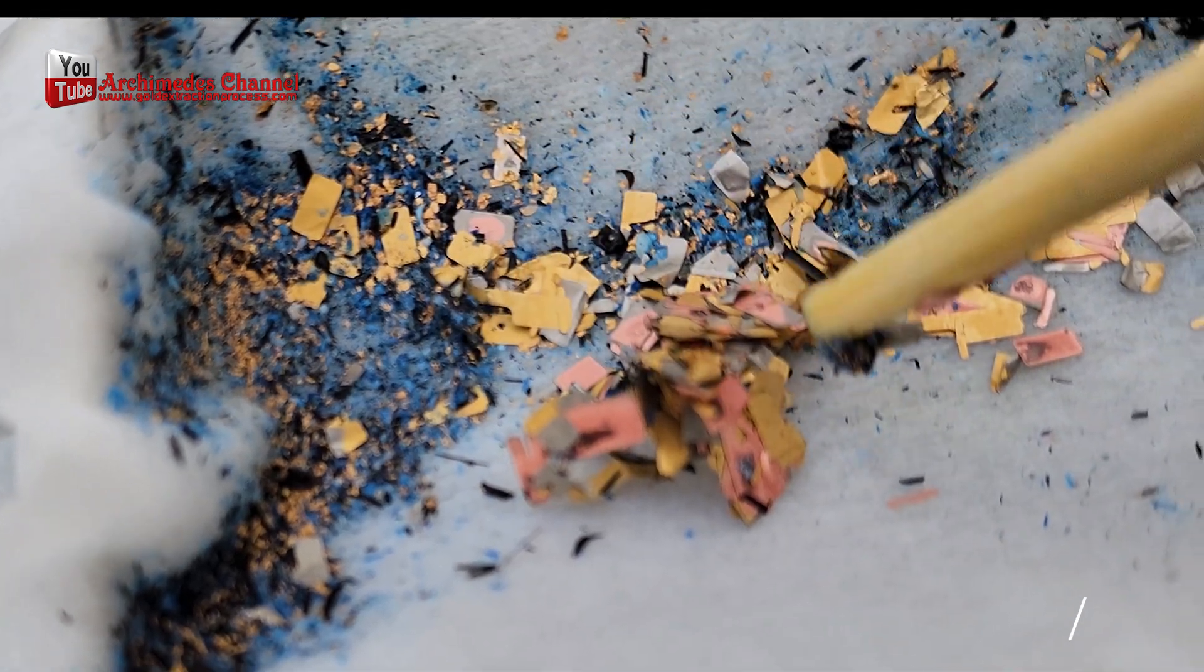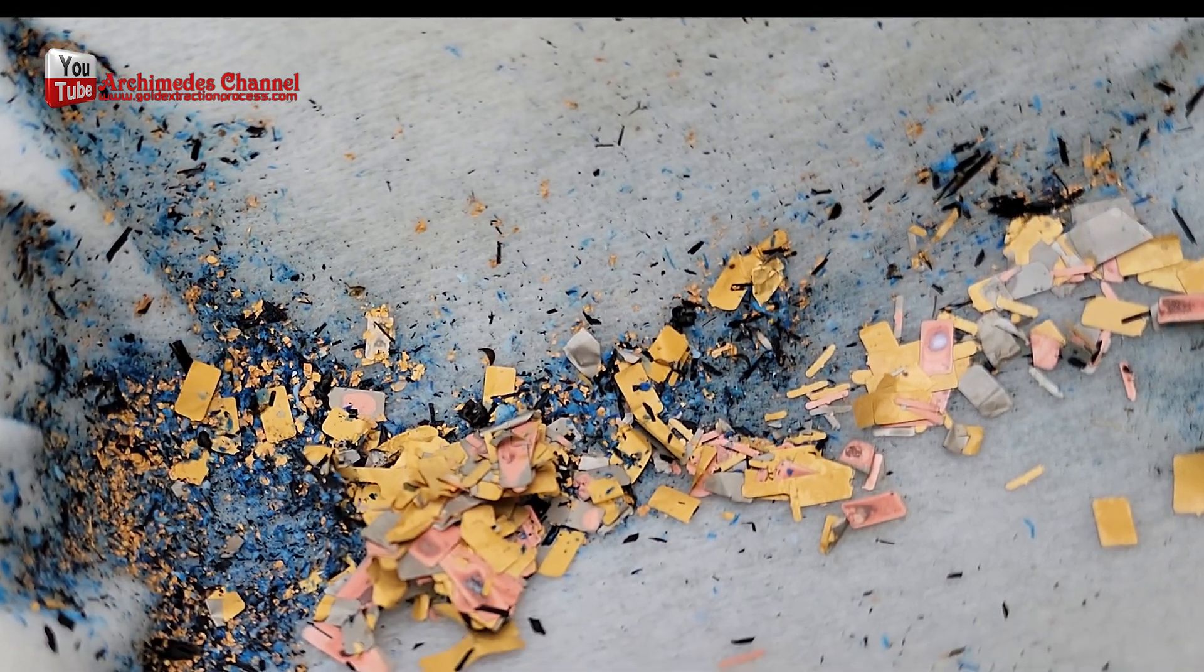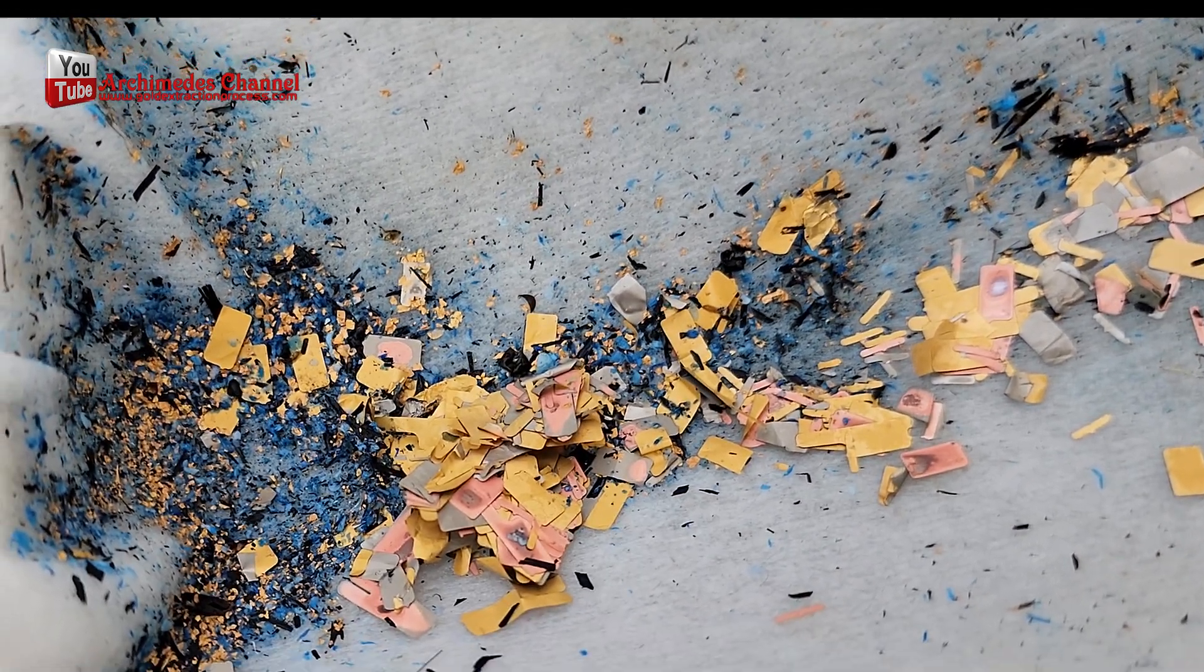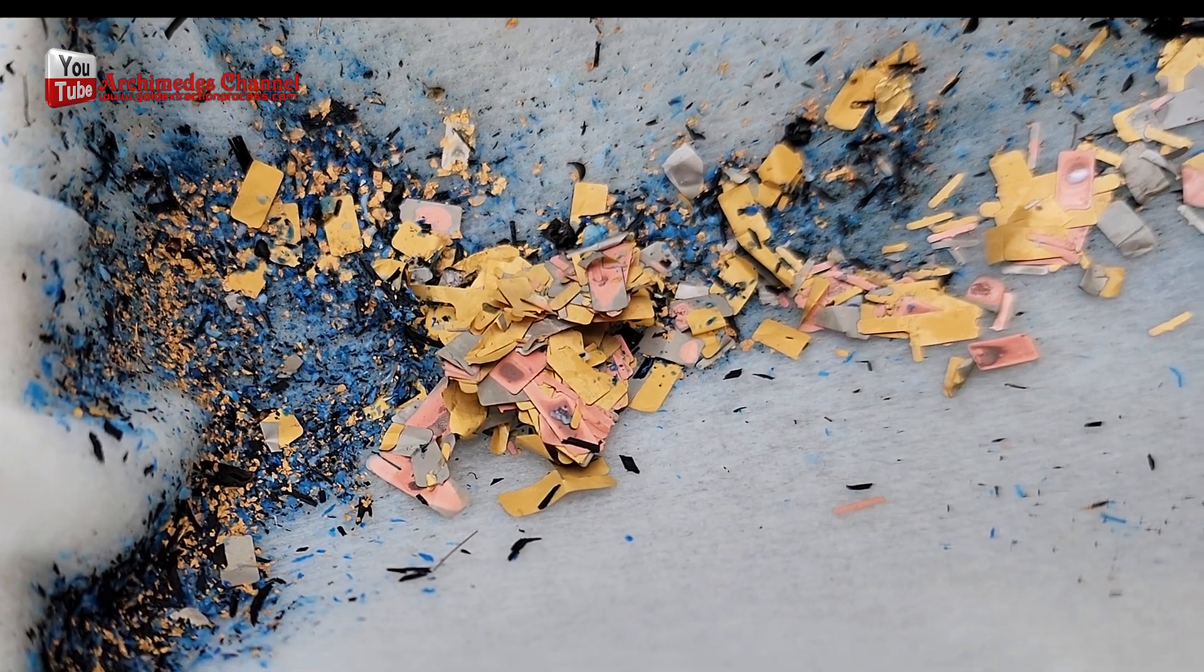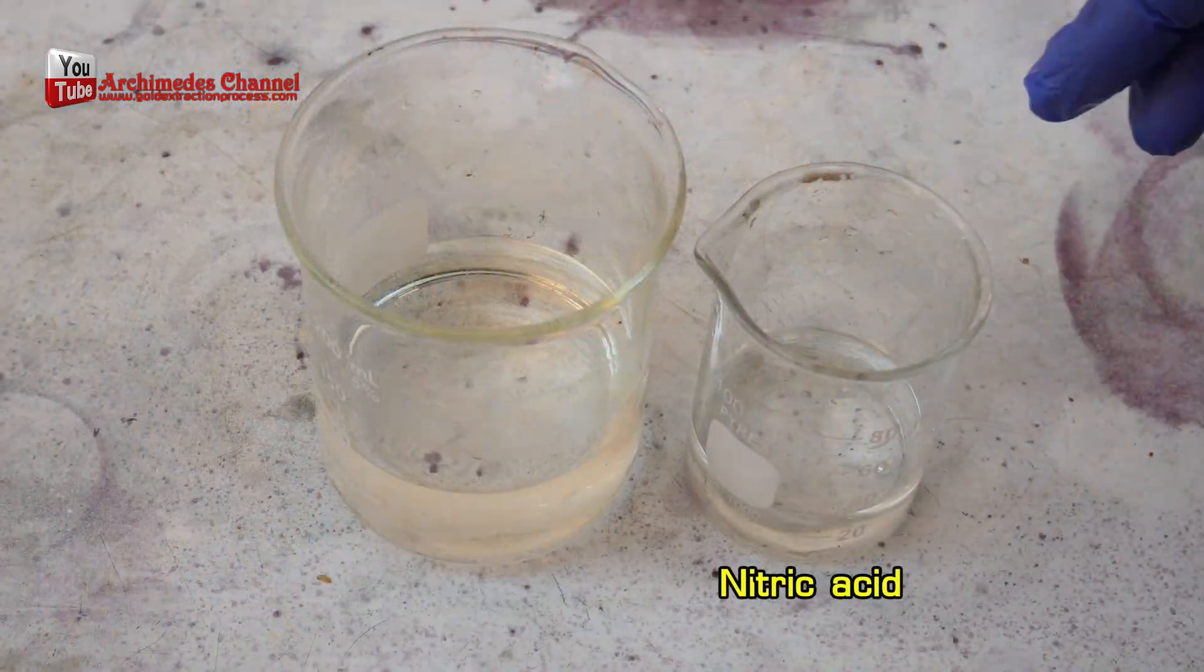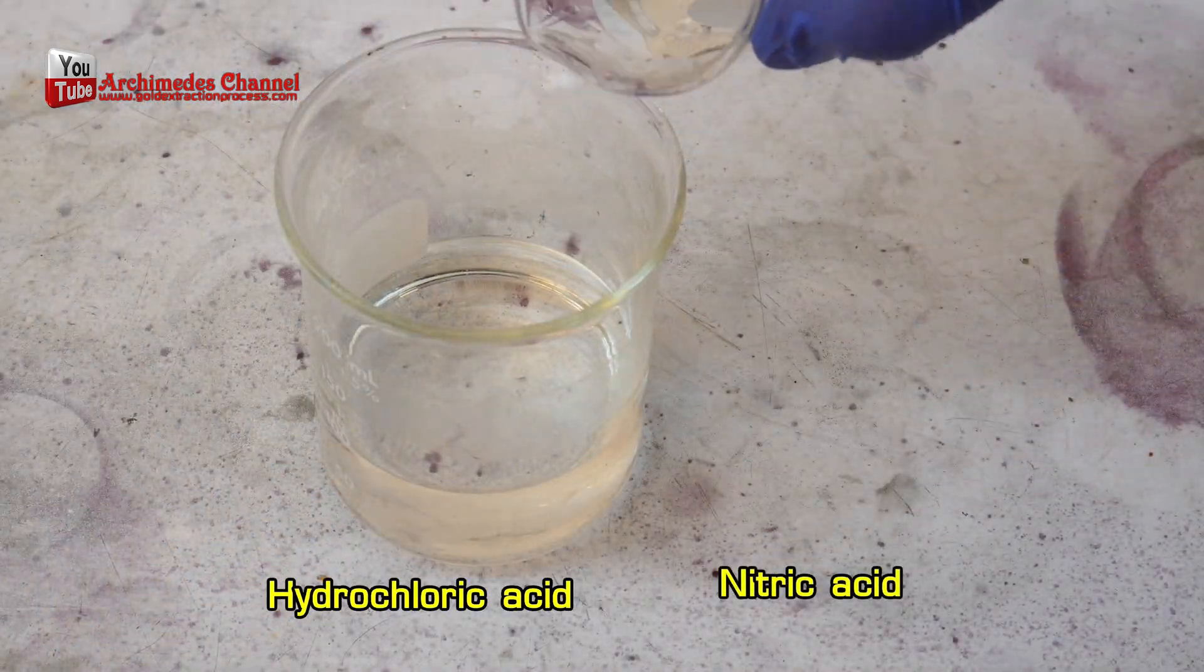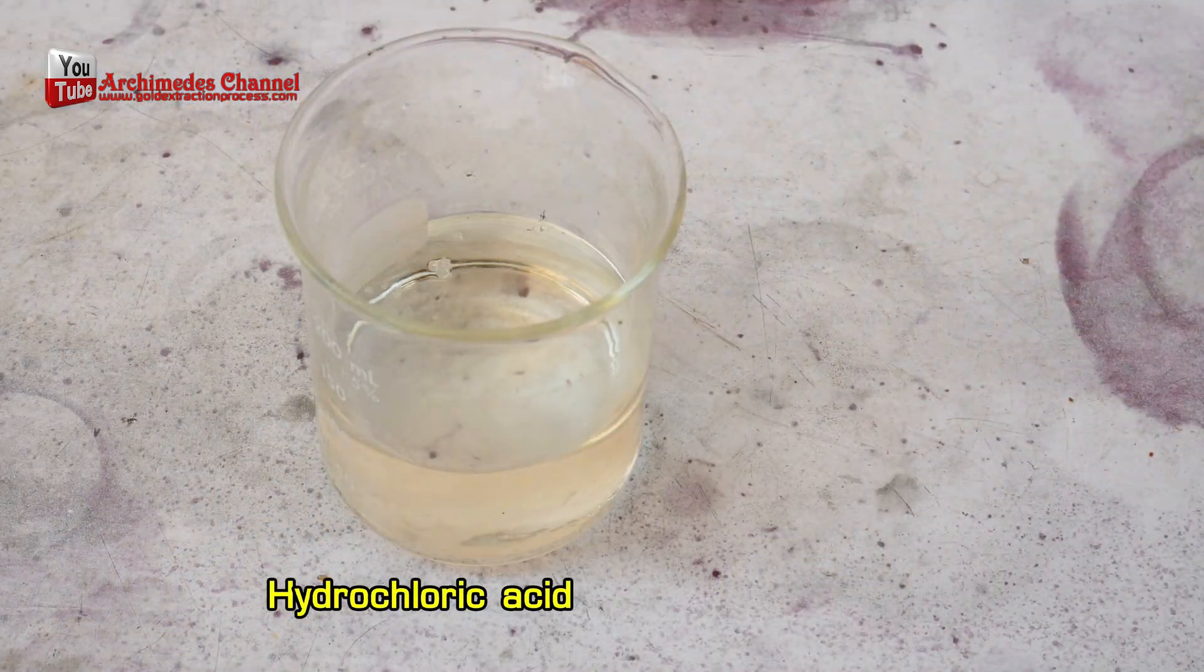To achieve greater than 99% purity can be achieved using aqua regia gold refining. Aqua regia is a mixture of hydrochloric acid and nitric acid at a ratio of either 3:1 or 4:1. It is a reddish-orange or yellowish-orange fuming liquid.